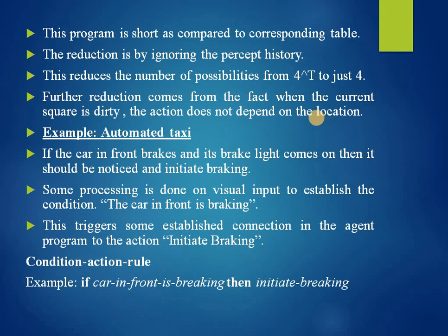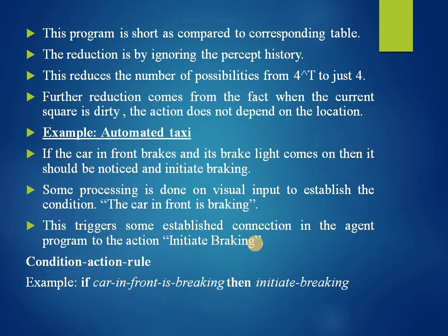Consider the example of an automated taxi driver. If the car in front brakes and its brake lights come on, the driver should notice this and initiate braking. Some processing is done on the visual input to establish the condition 'the car in front is braking', which triggers a connection in the agent program to the action 'initiate braking'. We call such a connection a condition-action rule, written as: if a car in front is braking, then initiate braking.